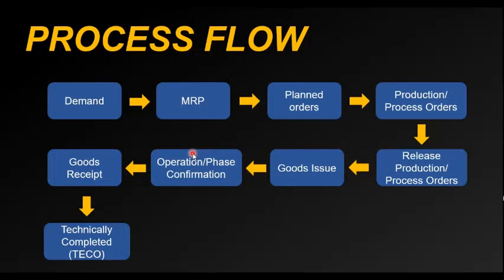Once the operation has been completed, the next step is to post a confirmation in the system. By confirming an operation on the production order, it means that particular operation has been completed on the shop floor. If there are 10 operations, you confirm all 10, which tells the system the production order has been completed.